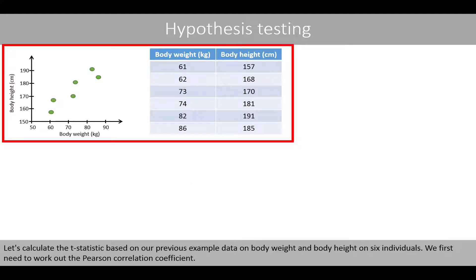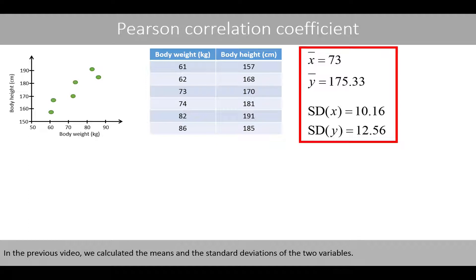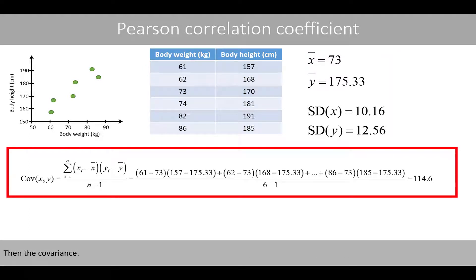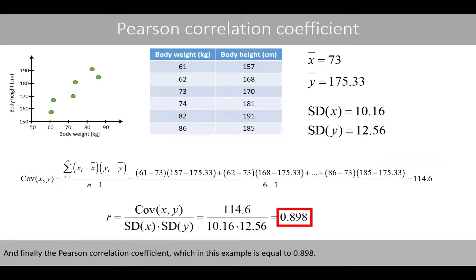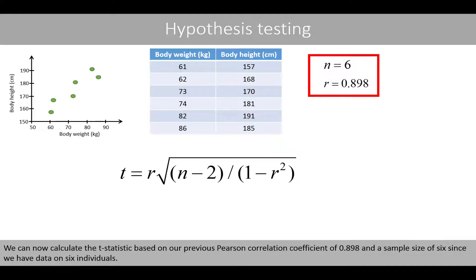Let's calculate the t-statistic based on our previous example data on body weight and body height for six individuals. We first need the Pearson correlation coefficient. In the previous video, we calculated the means and standard deviations of the two variables, then the covariance, and finally the Pearson correlation coefficient, which in this example is equal to 0.898. We can now calculate the t-statistic using r = 0.898 and sample size n = 6.